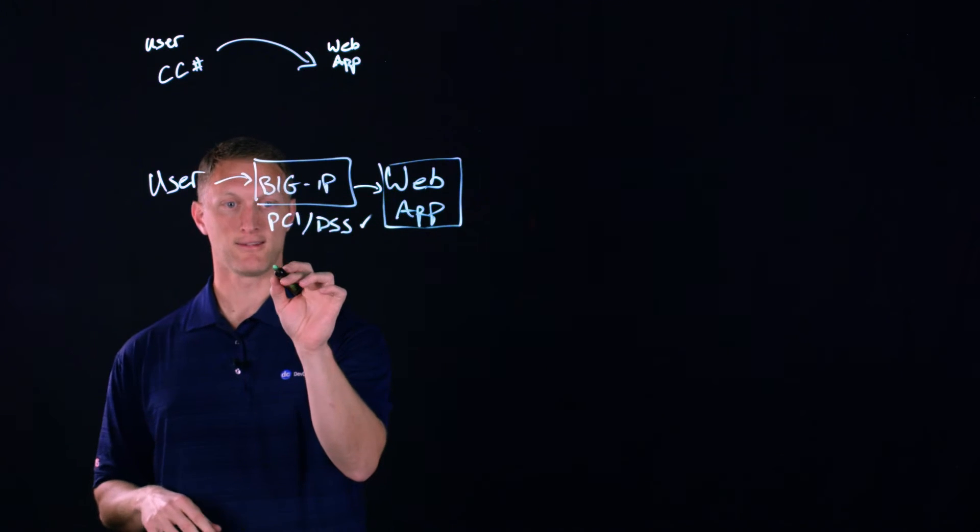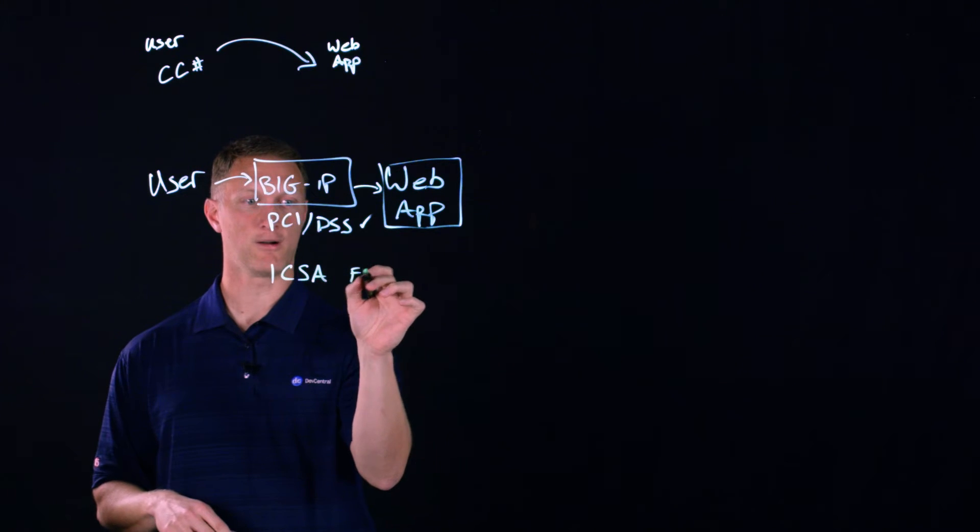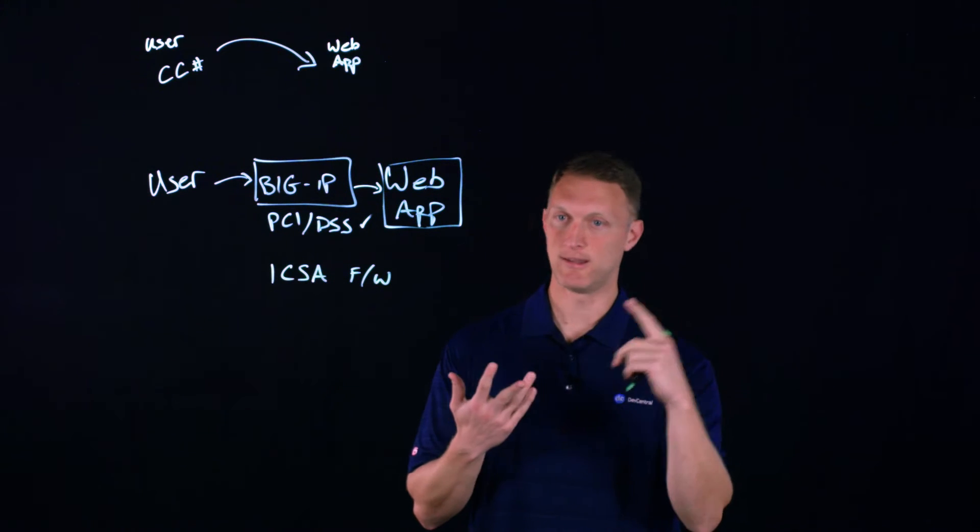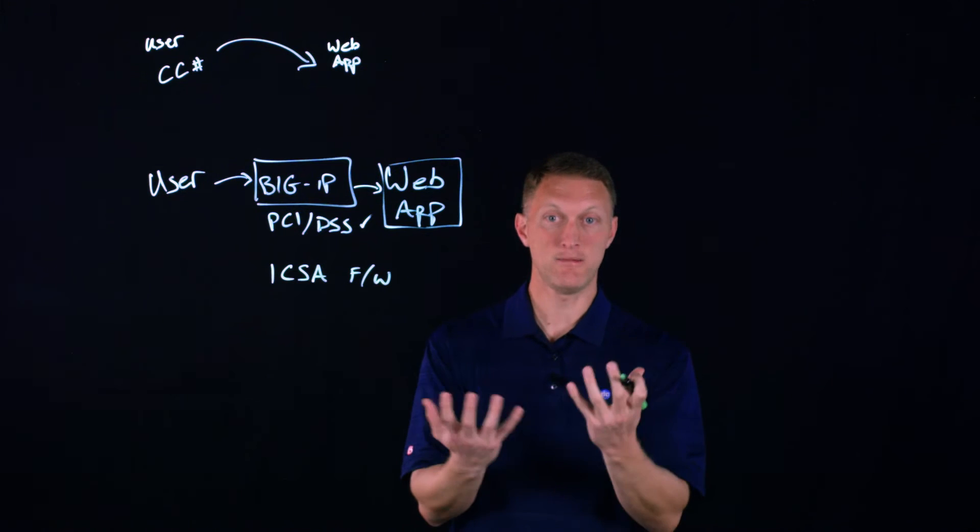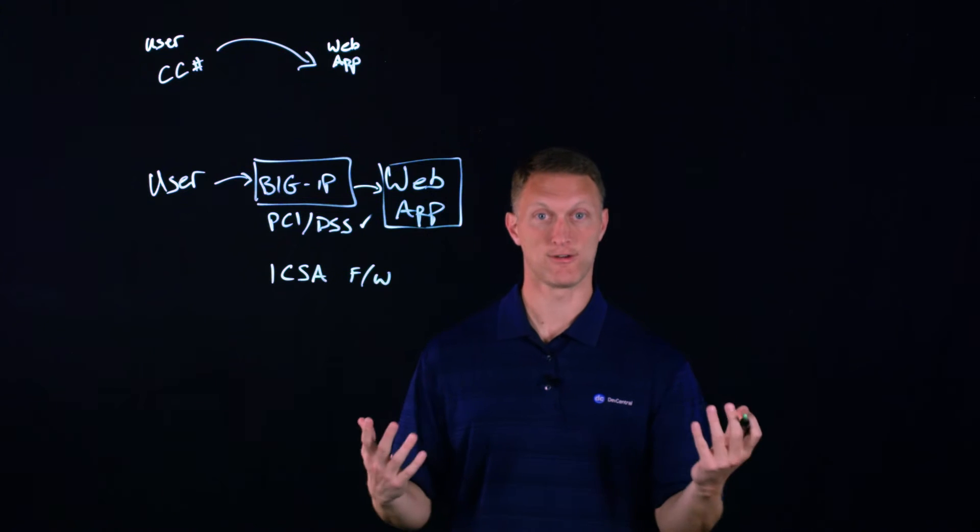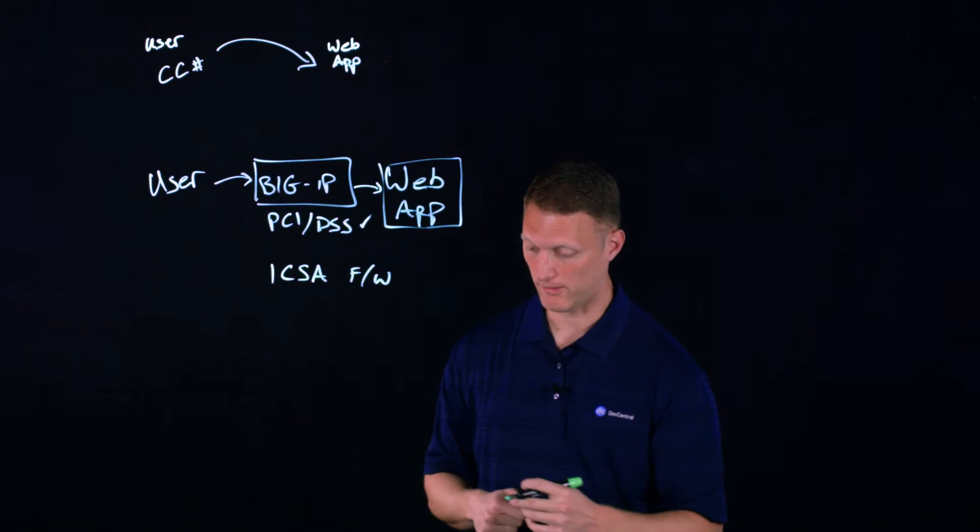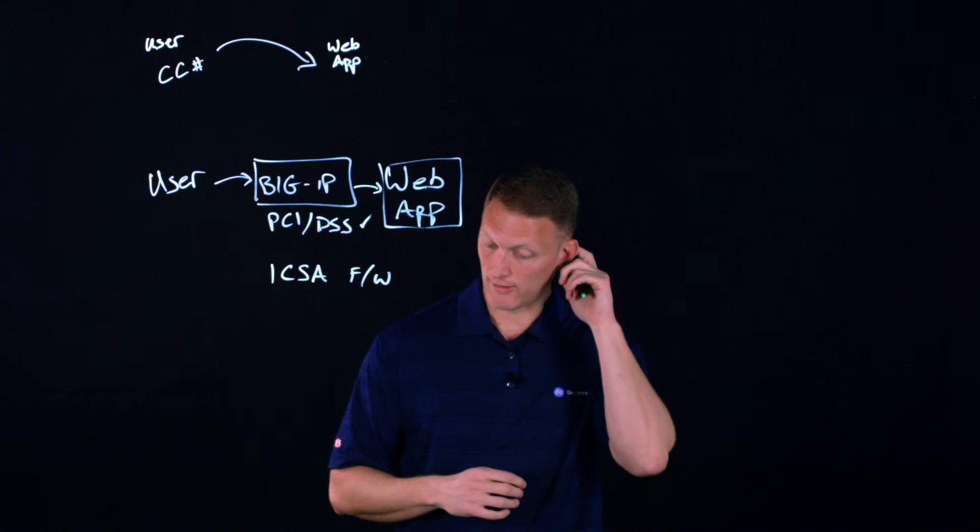So to build and maintain a secure network, one thing that's really cool about the big IP is it's an ICSA certified firewall. And so the big IP, whether you're running LTM or APM or ASM, whatever, it's built on the foundation of TMOS. And that has been certified as an ICSA certified firewall. So you run big IP at all, you've got a good firewall in the middle. So that gets to the heart of that build and maintain a secure network.